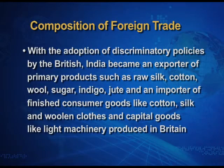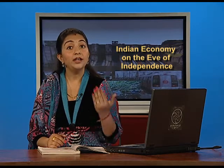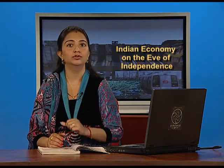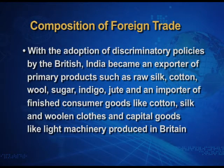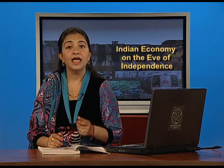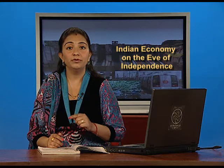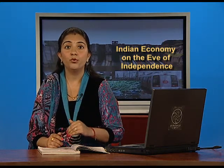With the adoption of discriminatory policies by the British, India became an exporter of primary products such as raw silk, cotton, wool, sugar, indigo, jute, etc. And an importer of finished consumer goods like cotton and silk clothes, woolen clothes, and capital goods like light machinery produced in Britain. India was falling short of capital goods industries, which is why light machinery produced in Britain was being imported into India.